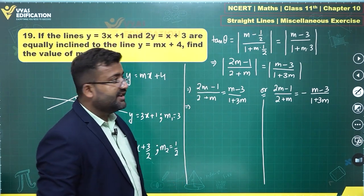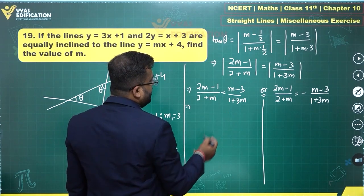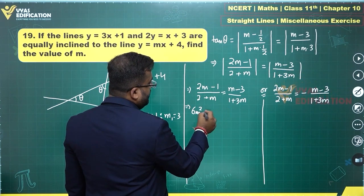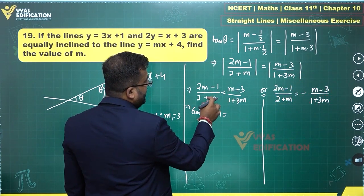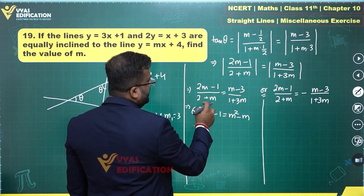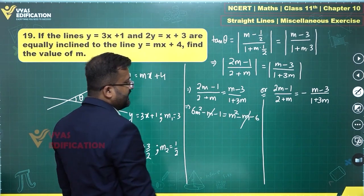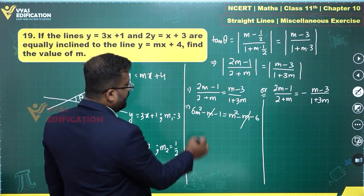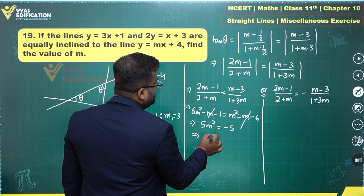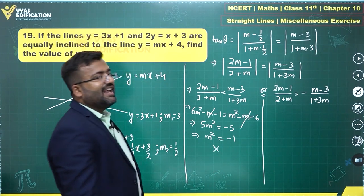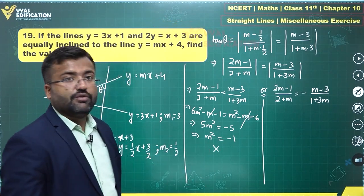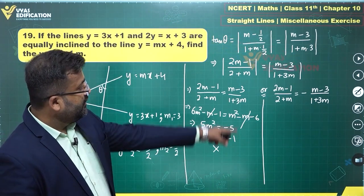For Case 1, cross-multiplying: (1 + 3m)(2m − 1) = 6m² − 3m + 2m − 1 = 6m² − m − 1, and (m − 3)(2 + m) = m² − m − 6. After equating, minus m cancels and we get 5m² = −5, meaning m² = −1. This gives no real value of m, so Case 1 is rejected.